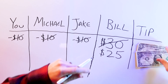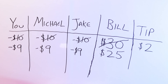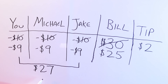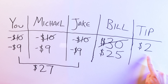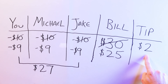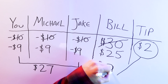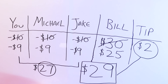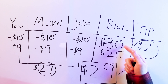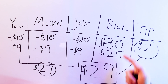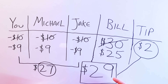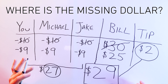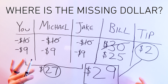So now you've only paid $9 each for lunch. 9 plus 9 plus 9 equals 27, plus the busboy kept $2 for himself, for a total of $29. But you originally paid $30 — so a dollar is missing. How does a dollar disappear? Where is the missing dollar?